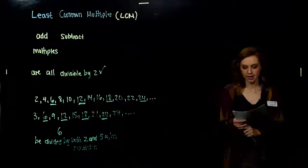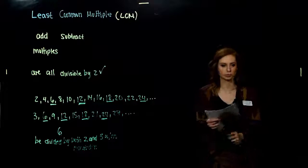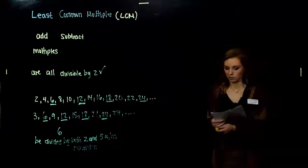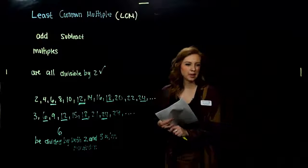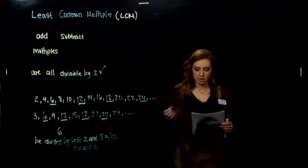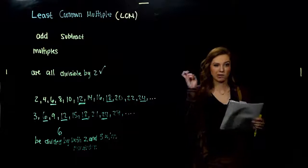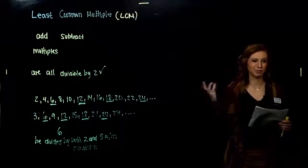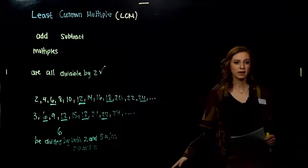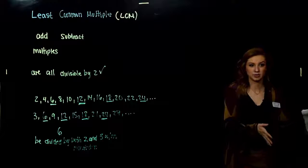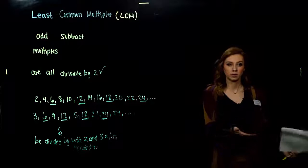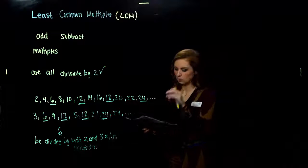So how do we find the LCM without writing out every single multiple? There are two different ways. The book has one way that I don't find very practical, and I'm going to present another way I call 'building.' If you're more comfortable with the book's way, you can use that — but I prefer the building method because it will help you later in your math career.